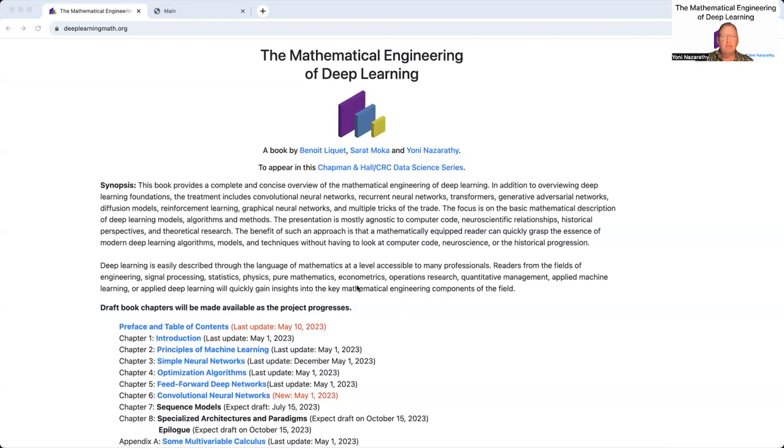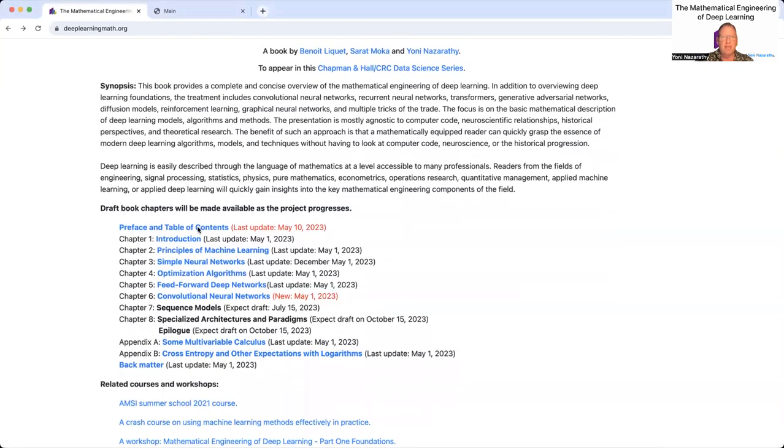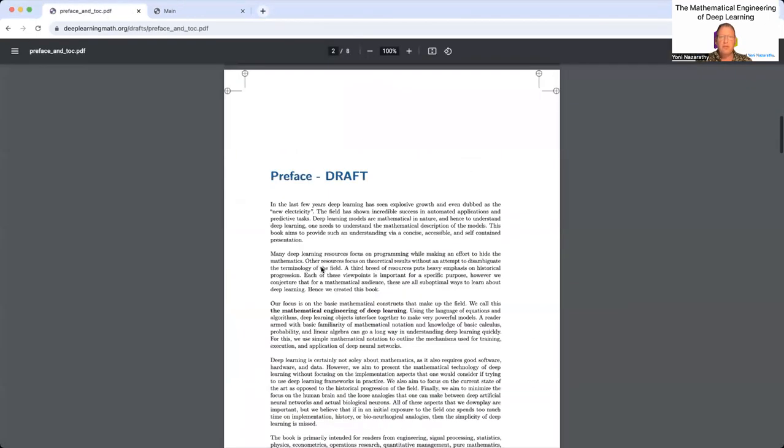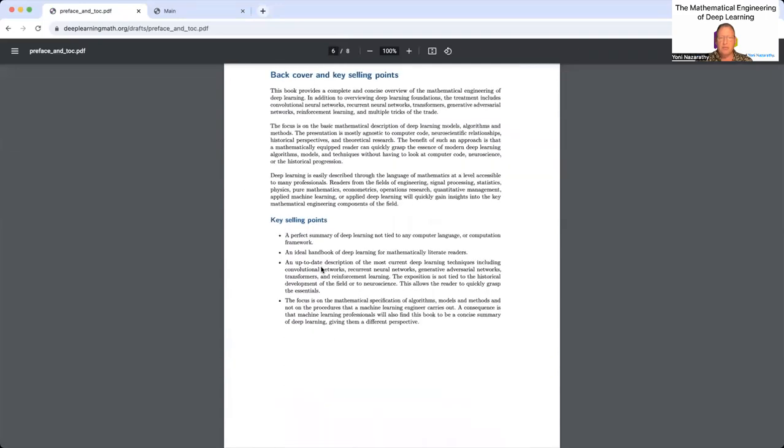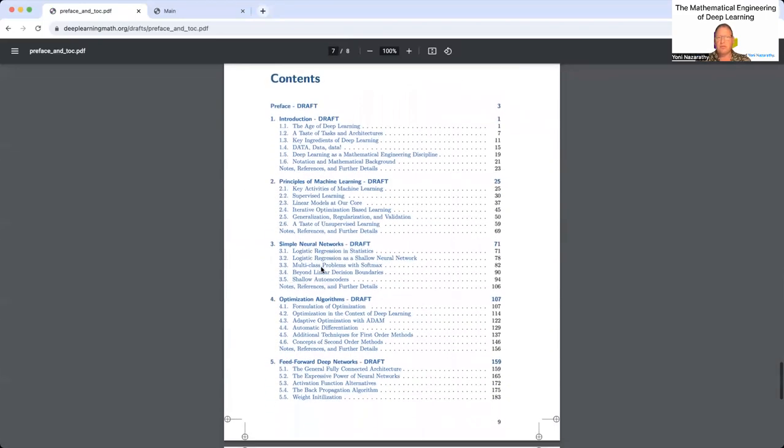Draft book chapters are available on the website. Let's look at the preface and table of contents. You can read the preface yourself if you'd like. In terms of the table of contents, it goes section by section with several sections per chapter.